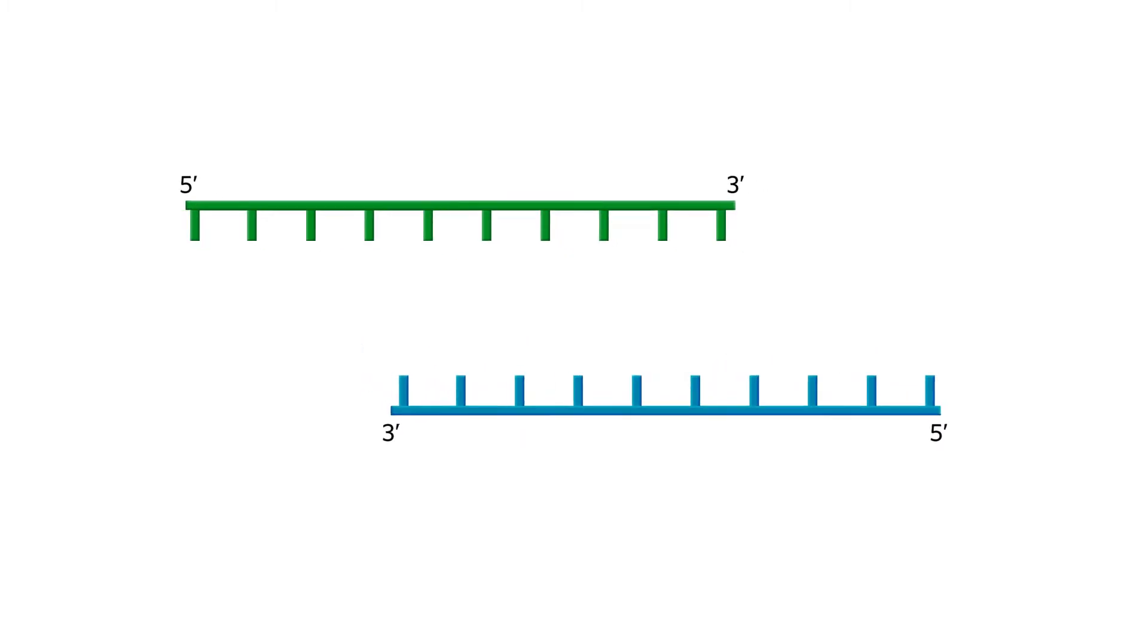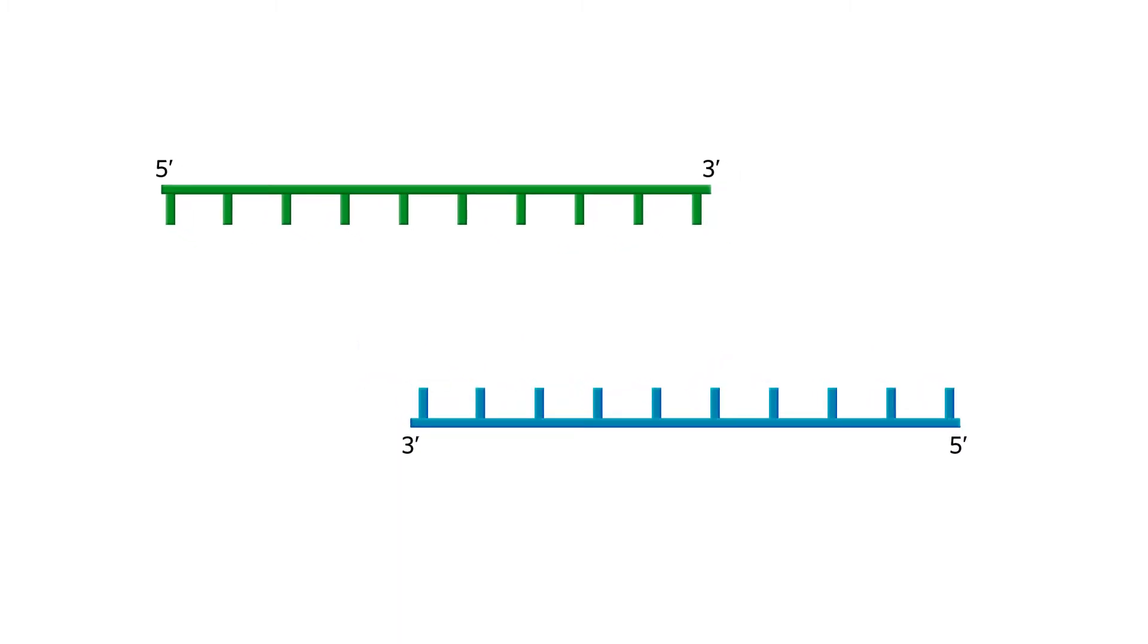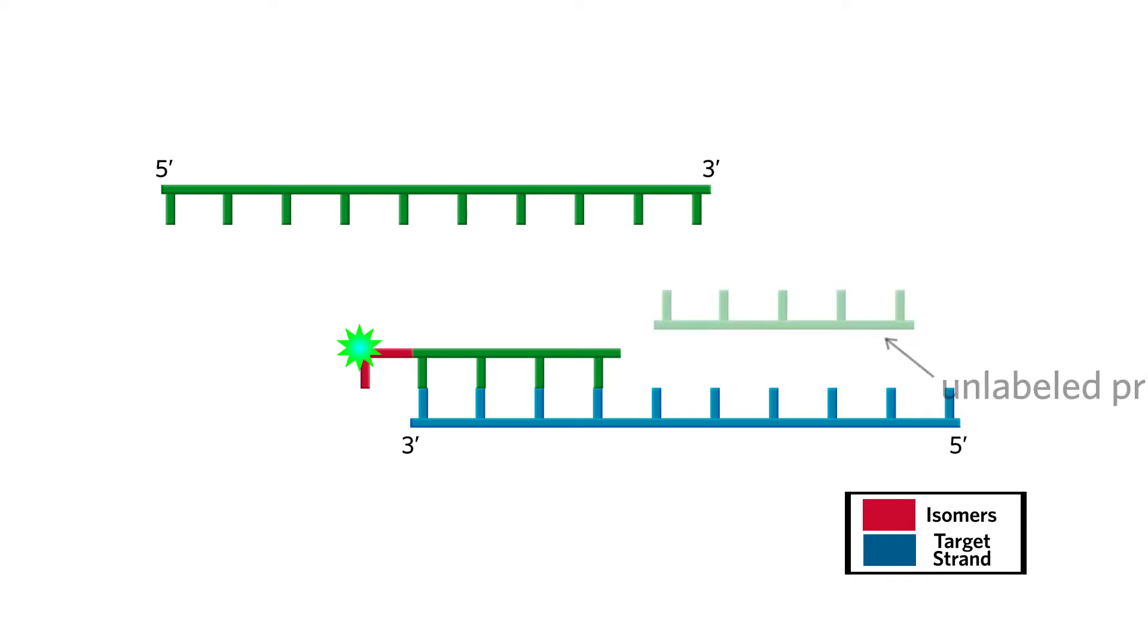Nucleic acid strands separate during the denaturing step of PCR. During the annealing step, the iso-C labeled primer can hybridize to the complementary target strand if present. An unlabeled primer, used for amplification, attaches to the opposite strand, becoming a target during the next PCR cycle.